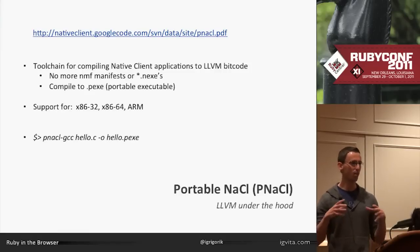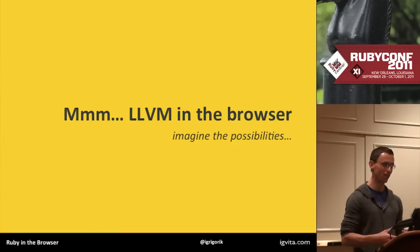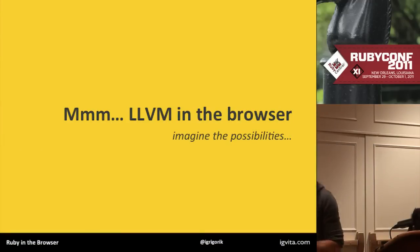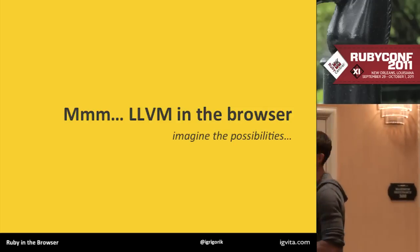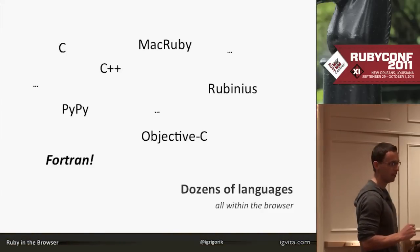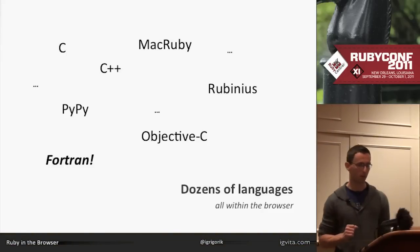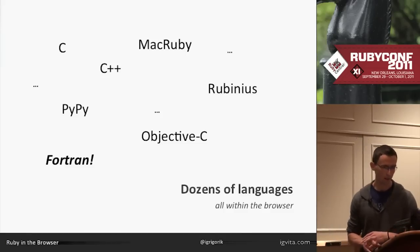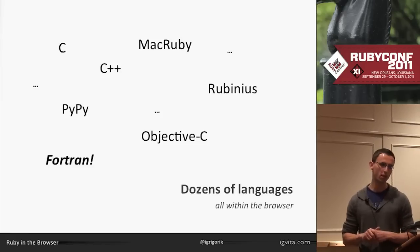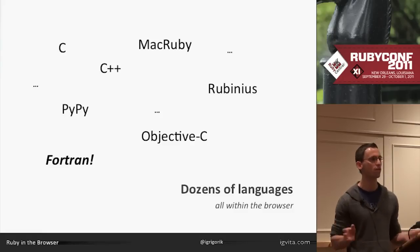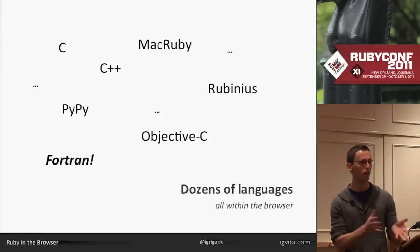So now we have LLVM in the browser, and this is pretty mind-blowing because there's a lot of interesting stuff built for LLVM. Fortran is available in LLVM — you can run Fortran in the browser. And of course we have Rubinius, which is based on LLVM. There's also C, C++, Mac Ruby, PyPy, Objective-C — there are dozens of languages already targeting LLVM.